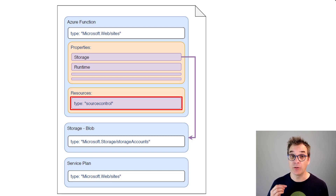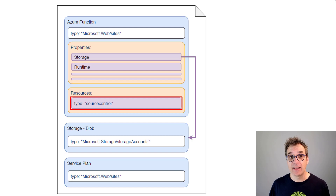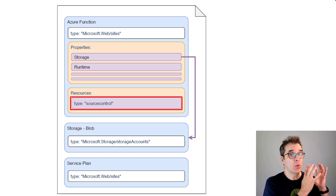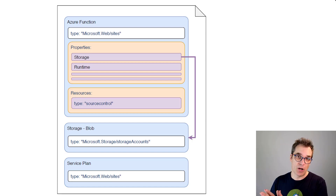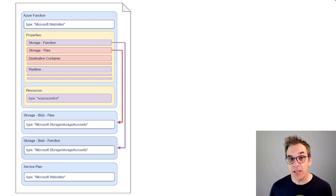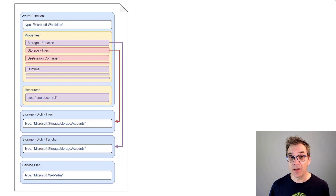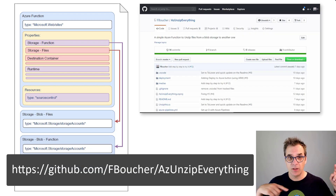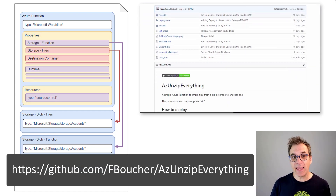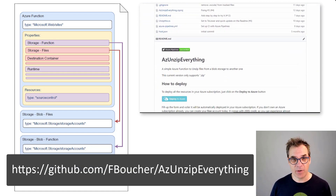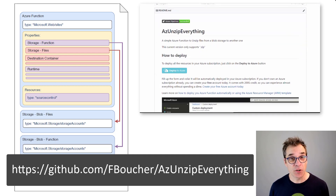Another list of elements will be sub-resources, and one of those will be source control. This is your way to specify where your code is. This way, when your function is instantiated, it will take the code from that location and put it in your storage. In today's demo, I want to create an ARM template for a project that is available online.